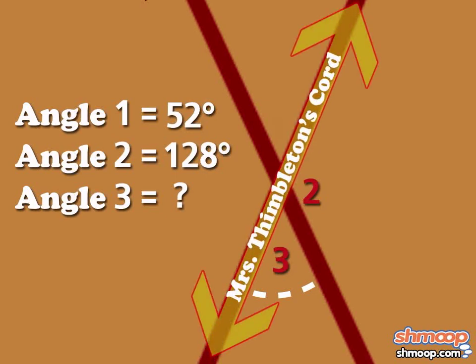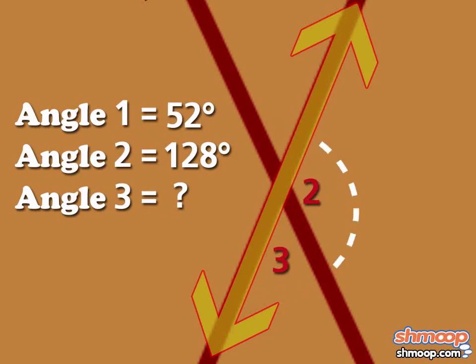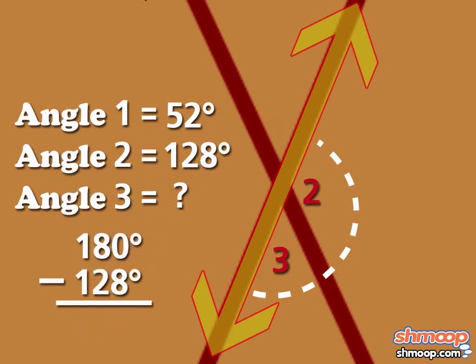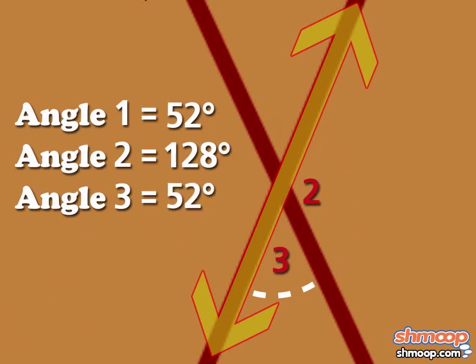It also makes a 180-degree angle, which means the side angle we just found and the bottom angle also add up to 180 degrees. If we take 180 minus 128, we end up with 52 degrees as the measure of the bottom angle.